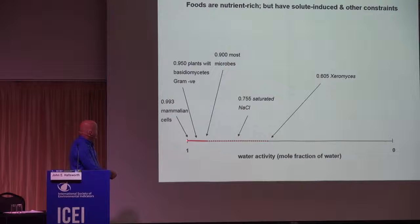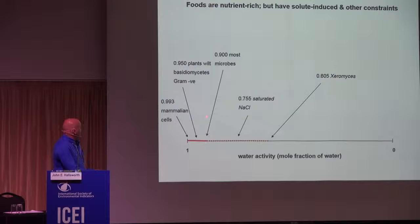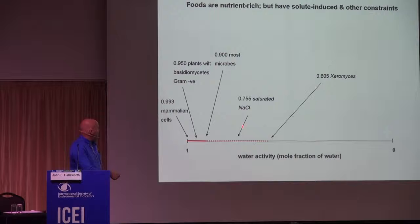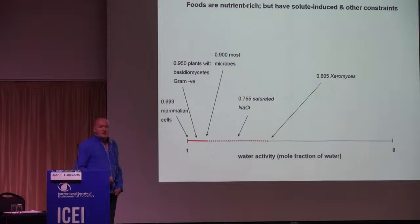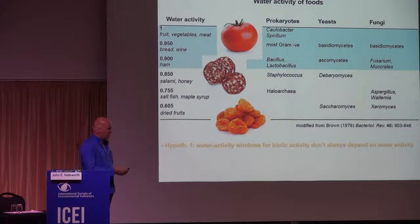Our own mammalian cells would die below a certain level — this is the water activity within the human system. Most terrestrial plants will wilt below 0.95, equivalent to a relative humidity of 95%; this is how much water living systems require. Most microbes wouldn't be able to grow below that level, and most microbes would never have any activity below 0.9. In extreme examples for extremophiles, salt-saturated systems of 5M NaCl have a water activity of 0.755, and one of the most extreme reports of microbial activity, published in 1968, demonstrated spore germination at 0.605, equivalent to 60% humidity.